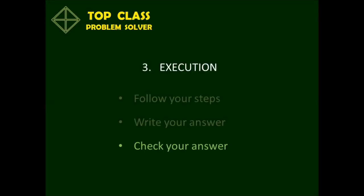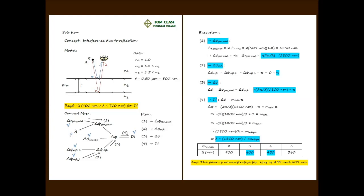The second step of the execution is to write down and highlight the final answer: the wavelengths that satisfy our condition are 450 and 600 nanometers. The third step of the execution is to check the answer — make sure you state clearly what is required, give the appropriate unit, and verify that the magnitude of your answer is reasonable. The unit in this case is nanometers, and both values fall within the required range of 400 to 700 nanometers.